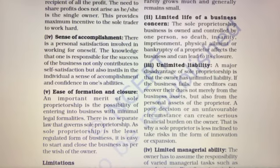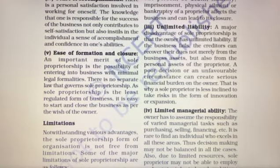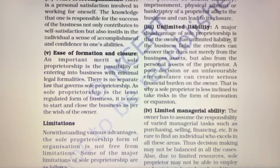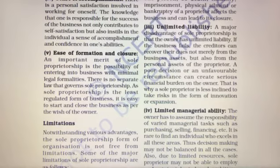The next limitation is unlimited liability. A major disadvantage of sole proprietorship is that the owner has unlimited liability — meaning the entire financial burden falls on a single individual, with no limit to what they may owe.